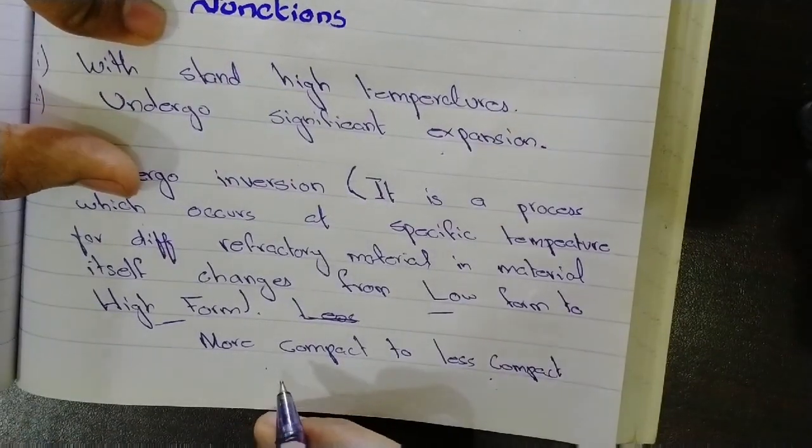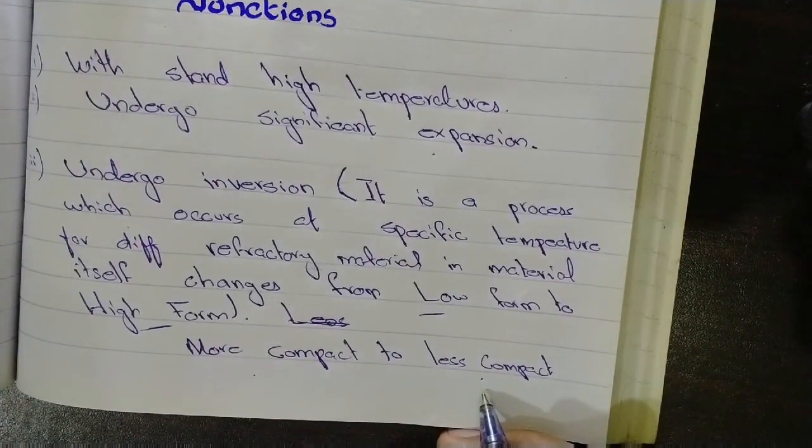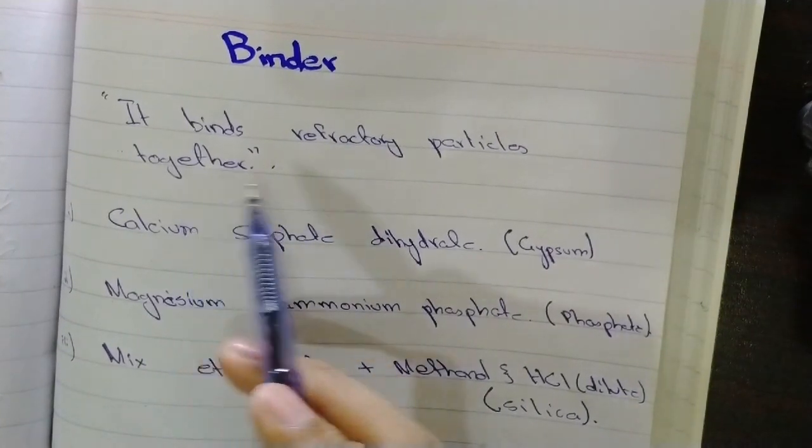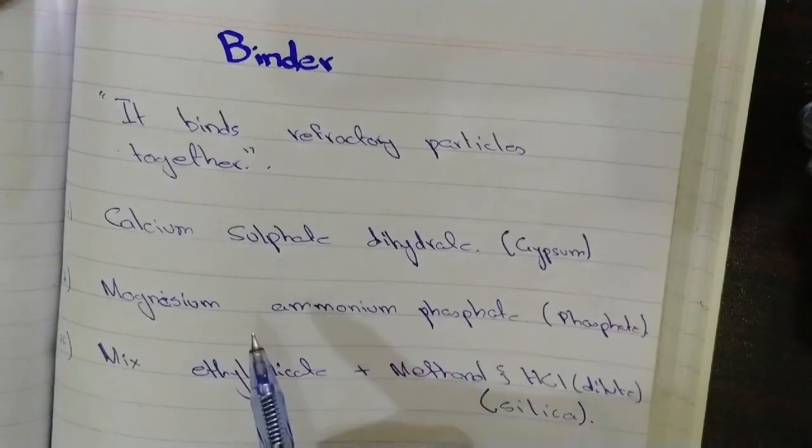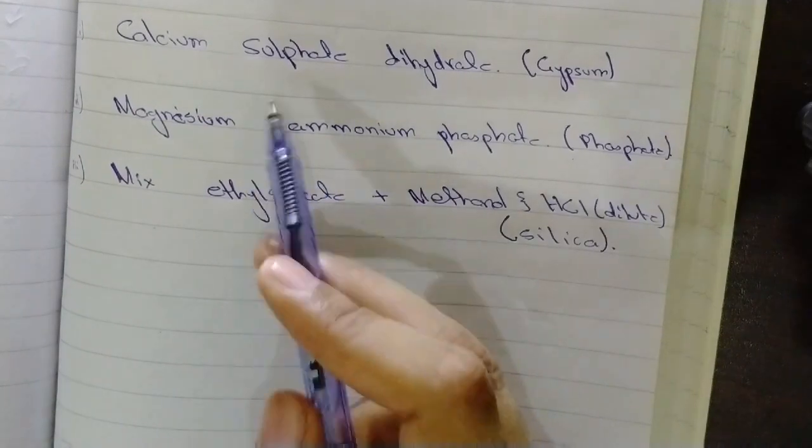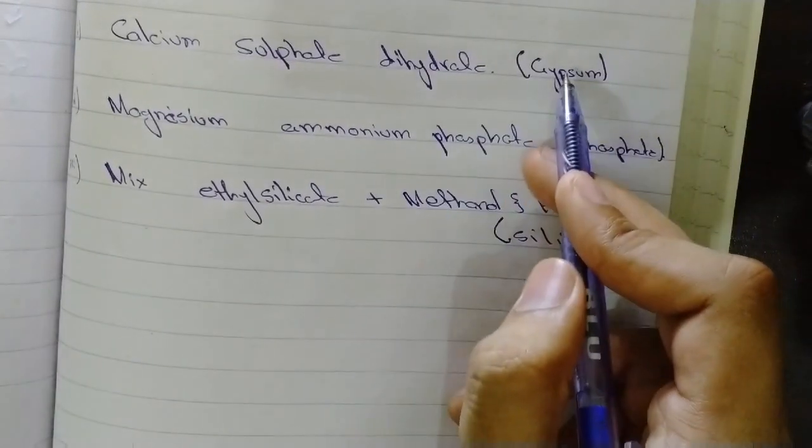Now the binder. Binder binds refractory particles together. Binders are of several types for different investment materials.